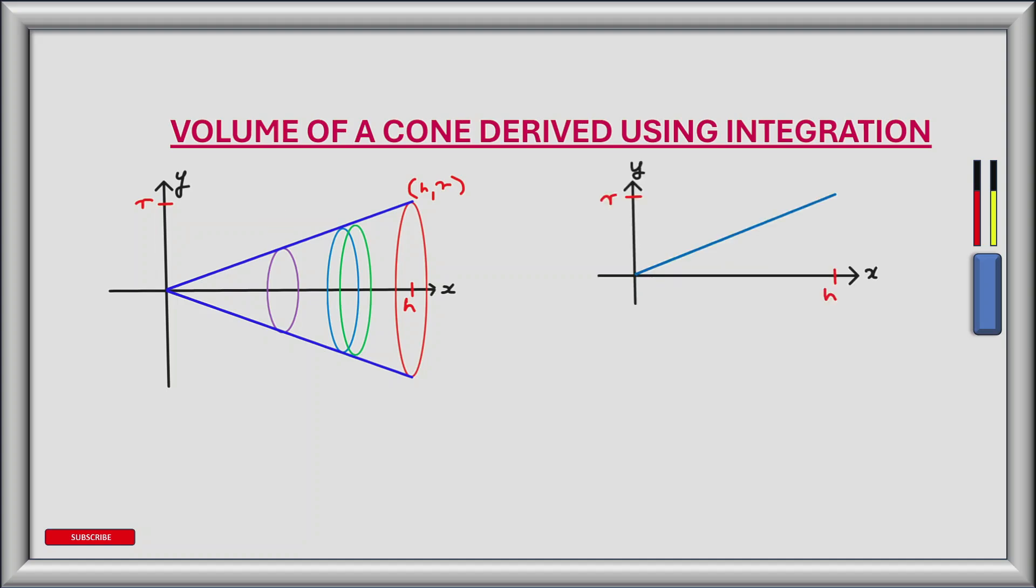To help explain this I've drawn this line on a separate graph. On the graph I've indicated point h on the x-axis and point r on the y-axis. h is the height of the cone and r is the radius of the circle at the base of the cone.